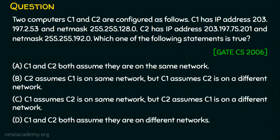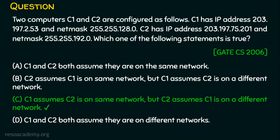That's it — we solved this problem. Revisiting the options: Option A is wrong, Option B is wrong. Option C states C1 assumes C2 is on the same network — true — and C2 assumes C1 is on a different network — also true. Option D is also wrong. So the right answer is Option C. I hope you enjoyed this lecture. Thank you for watching.